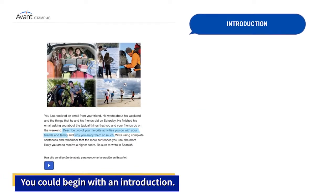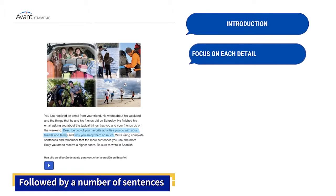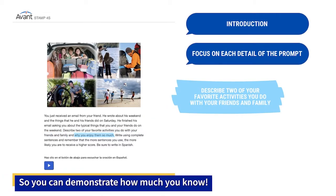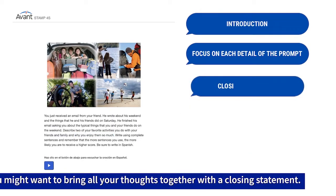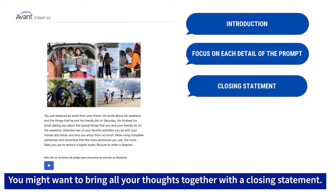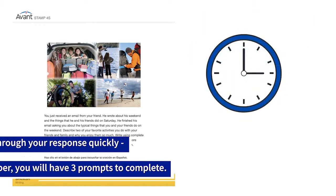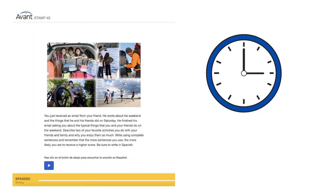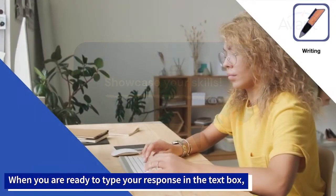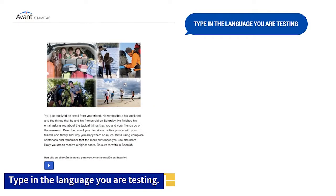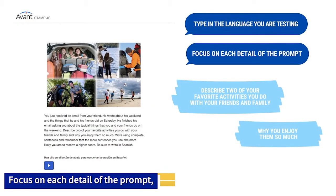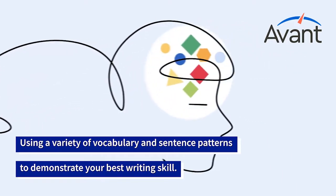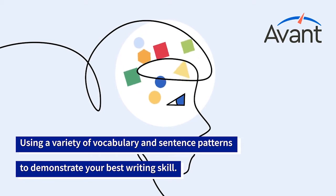You could begin with an introduction, followed by a number of sentences that focus on each detail of the prompt, so you can demonstrate just how much you know. You might want to bring all your thoughts together with a closing statement. Think through your response quickly. Remember, you will have three prompts to complete. When you are ready to type your response in the text box, type in the language you are testing. Focus on each detail of the prompt, using a variety of vocabulary and sentence patterns to demonstrate your best writing skill.